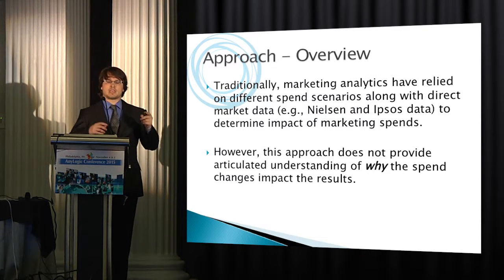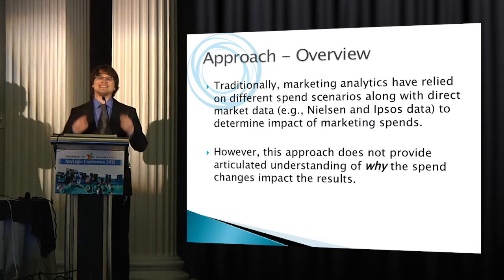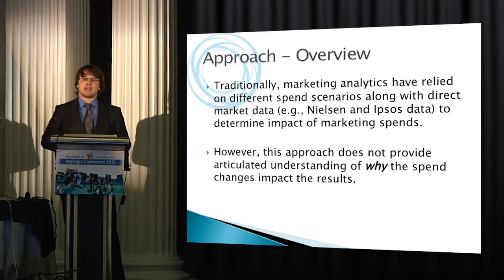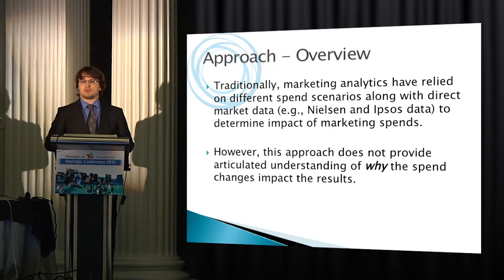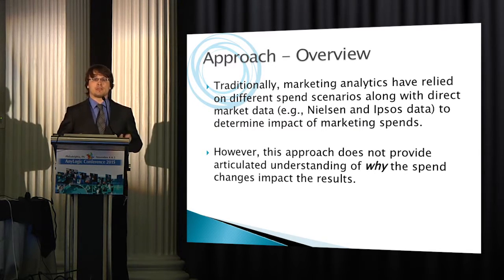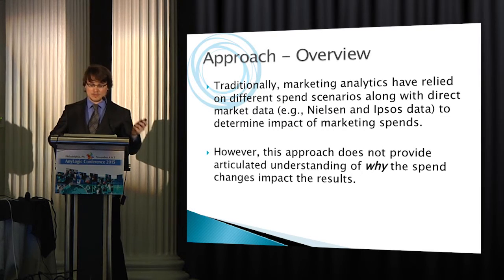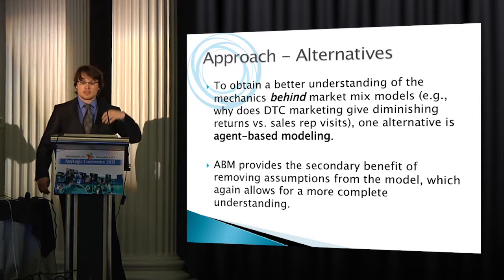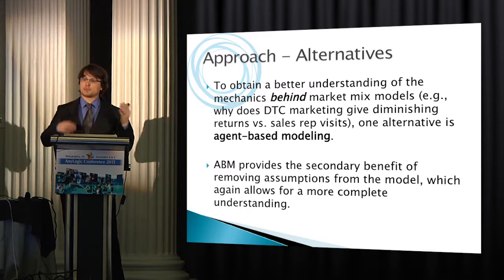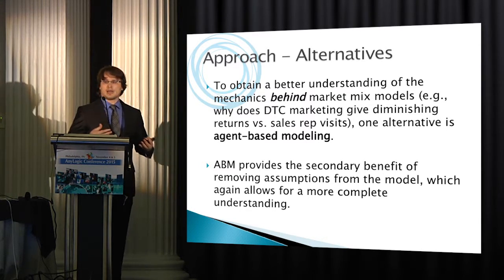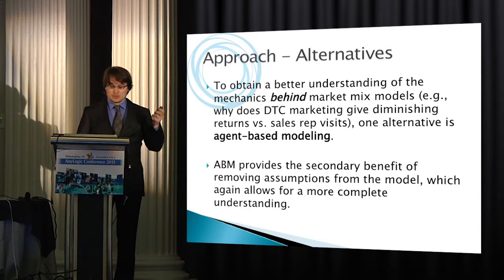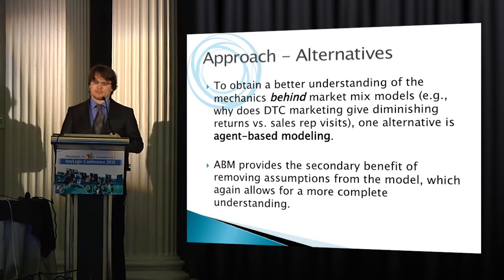The issue is that it wasn't just the answer they wanted — they wanted insight. They wanted to know why, as was mentioned. More and more people want insight. Market mix models can give you betas and weights, but they can't tell you why those weights exist necessarily. So to get a better understanding of why this is occurring, the alternative they asked for was agent-based modeling. This also allows us to remove some assumptions from regressions, such as linearity in the betas, to get a more complete understanding of the process.